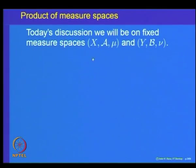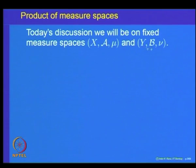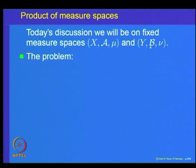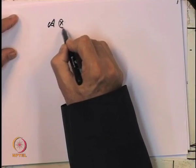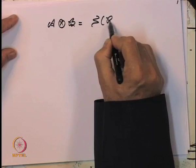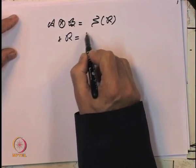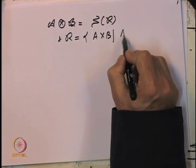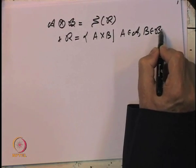Let us recall. We will fix for today's discussion two measure spaces (X, A, μ) and (Y, B, ν). X is a set, A is a sigma algebra of subsets of X, and μ is a measure defined on the sigma algebra A. Similarly, for the measure space (Y, B, ν), B is a sigma algebra of subsets of Y and ν is a measure on B. We have already defined the notion of the product sigma algebra A⊗B.